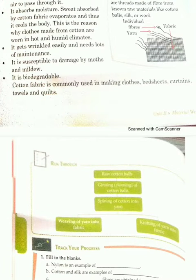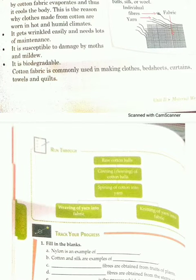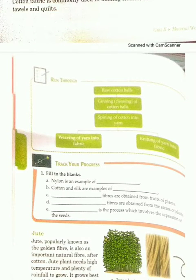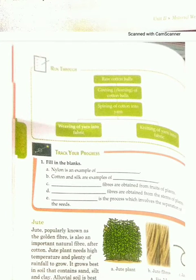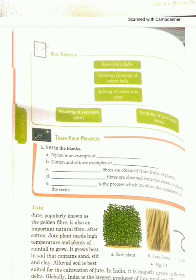Why is cotton so popular? It is a soft fabric, it allows air to pass through, and it absorbs moisture and sweat. However, it gets wrinkled easily — this is a disadvantage. It needs a lot of maintenance, and it can be damaged easily by moths. But the good thing is that it is biodegradable. The uses of cotton fiber include making clothes, bedsheets, curtains, towels, and quilts.